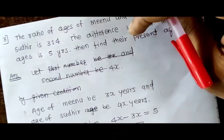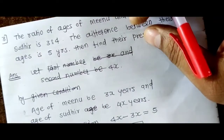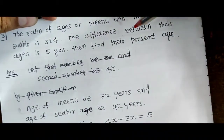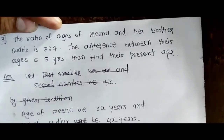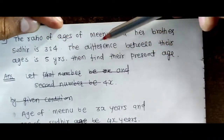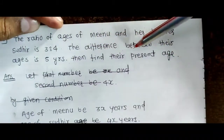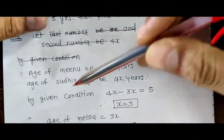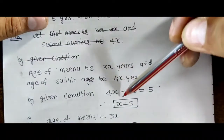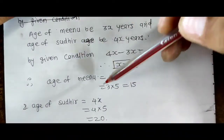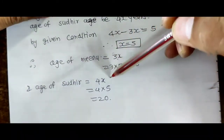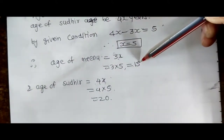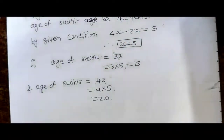Next question: the ratio of the ages of Minu and her brother Sudhir is 3 to 4. The difference between their ages is 5 years, then find their present ages. Let age of Minu be 3x years and age of Sudhir be 4x years. By given condition, 4x minus 3x equals 5, so x equals 5. Therefore age of Minu equals 3 into 5 equals 15 years, and age of Sudhir equals 4 into 5 equals 20 years.